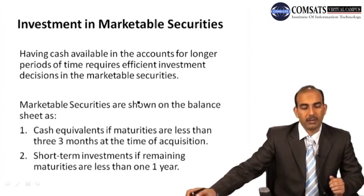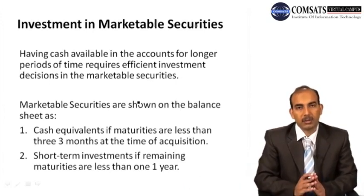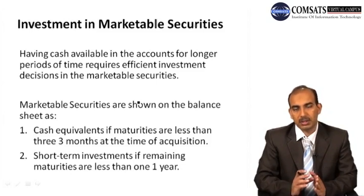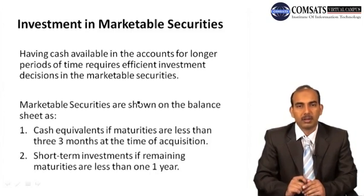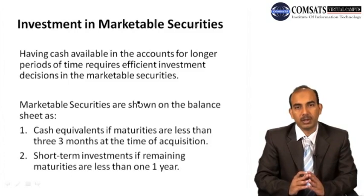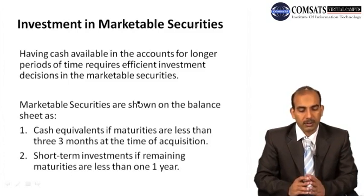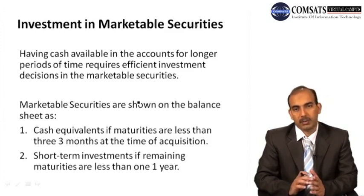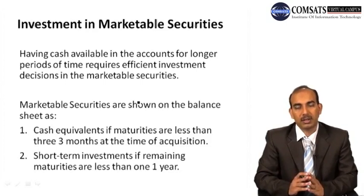We can invest the remaining cash in marketable securities. Having cash available in accounts for longer periods of time requires efficient investment decisions in marketable securities. Marketable securities are shown in the balance sheet under cash and cash equivalents. Cash equivalents are marketable securities with a maturity period of less than three months. So if maturities are less than three months at the time of acquisition — that is, the remaining period to maturity is under three months — we can call it a cash equivalent.